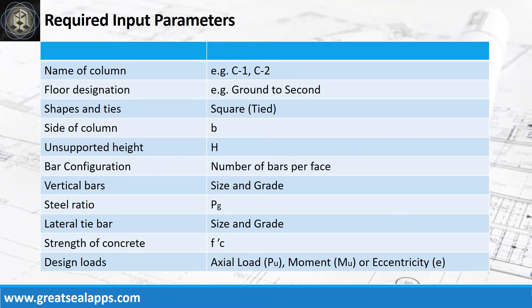Enumerate the input parameters required: name of column like C1 or C2, floor designation like ground to second, shapes and ties, side of column, unsupported height, bar configuration, vertical bars with size and grade, steel ratio, lateral tie bars with size and grade, strength of concrete, and design loads.